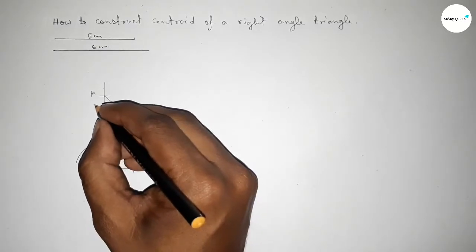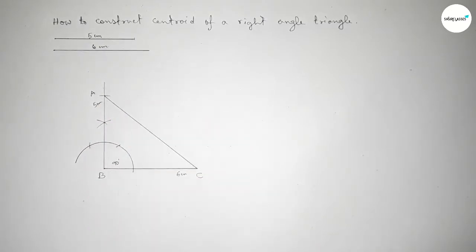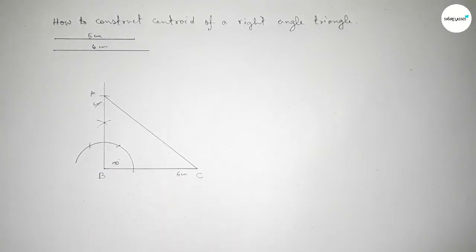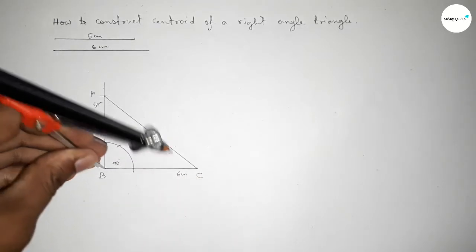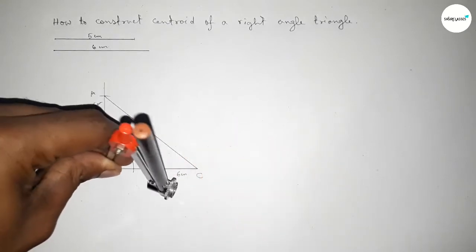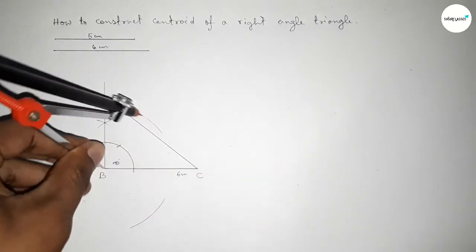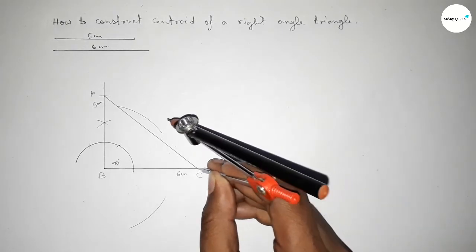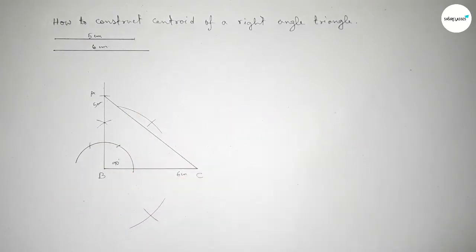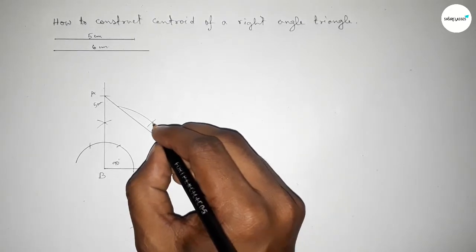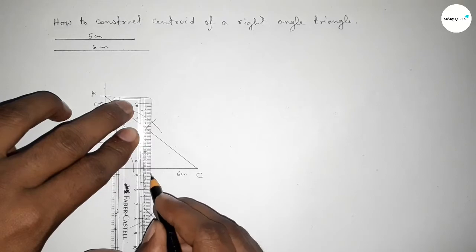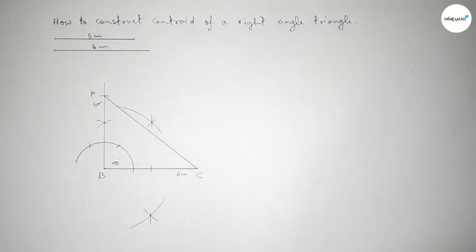Now we have to bisect the line BC first. Putting the compass here and taking greater than half of BC, drawing an arc here and drawing an arc on the other side. With the same length, putting the compass here and cutting arcs on both sides — both curves intersect at two points. Joining this line, which bisects the line BC at a point.